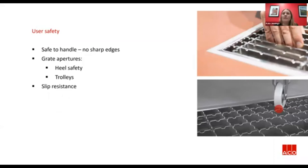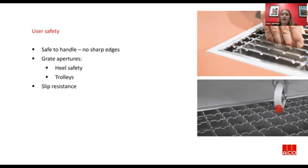Within a commercial kitchen, some areas will be fairly exclusively used by servers and some exclusively used by chefs, and these two groups of people have very different footwear. The grate specification or selection in those areas should reflect this. In serving areas — think front of house, where food has been plated up and is being carried out into the dining room — some waiters might wear stiletto heels, which means grates at the front of house should probably be heel safe. We classify grates as heel safe if the slot apertures are 10 millimetres or smaller.